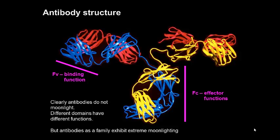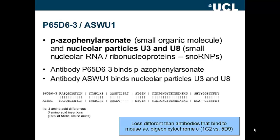Using the Cabot collection of antibody sequences, we extracted the CDR loops where the antigen is known and compared their sequences. We then selected examples where the sequence identity in the CDRs is above 90% and where the antigens are very different. Antibodies P65D63 and ASWU1 bind to very different antigens: one binds to a small organic molecule while the other binds to a small nucleolar RNA and ribonuclear proteins. However, when we look at the sequences of the CDRs, we find just three amino acid differences and six amino acid insertions. This level of similarity is similar to what is seen between antibodies binding cytochrome C from mice compared with pigeons.